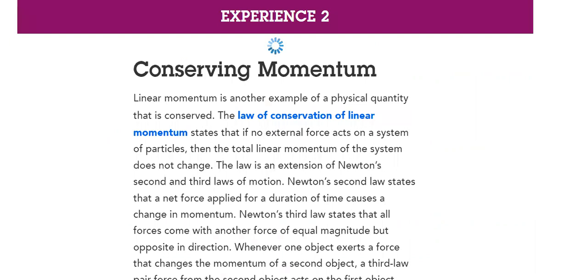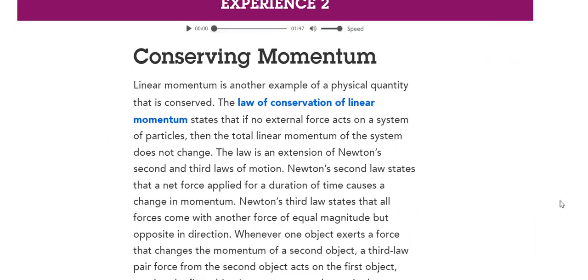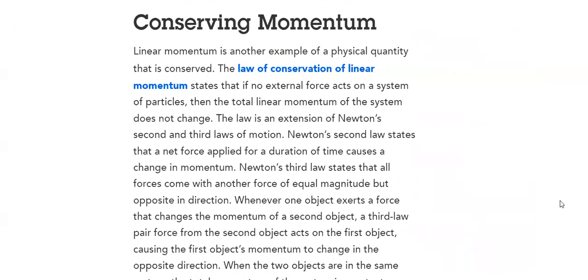So again, we're talking about conservation of momentum. We will revisit what is meant by momentum. We have linear momentum. What does it say? It's another example of a physical quantity that is conserved. The law of conservation of linear momentum states that if no external force acts on a system of particles, then the total linear momentum of the system does not change.